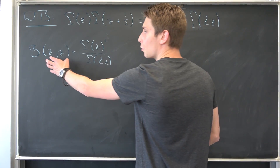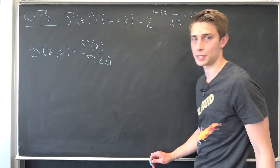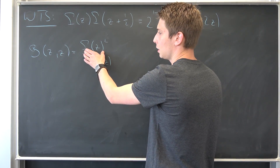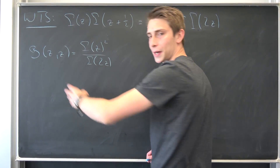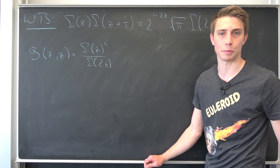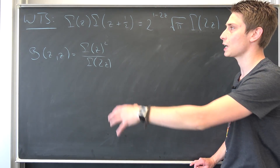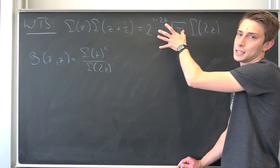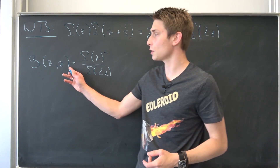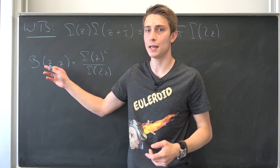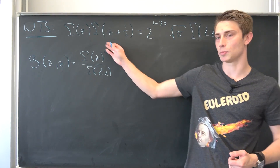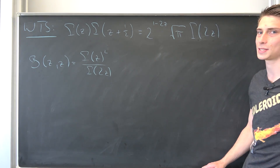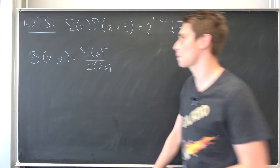We are only going to take a look at this thing right now, because we can manipulate this into something really nice. We can actually express it in a useful form. So let us take a look at Beta of z comma z — that was just the motivation for where this Gamma of 2z is going to come from.